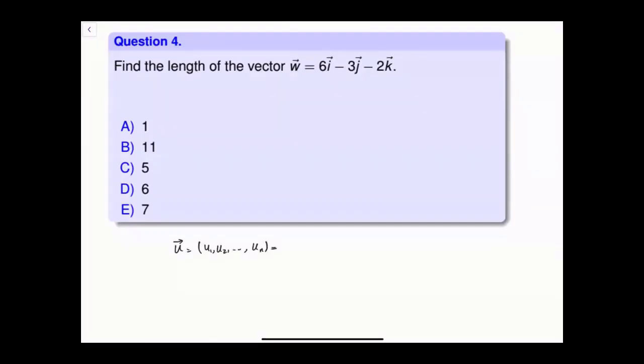The length of the vector, which we denote by this double line, is you square each component, and then add them, and find its square root. It will be a positive number, as length always is.